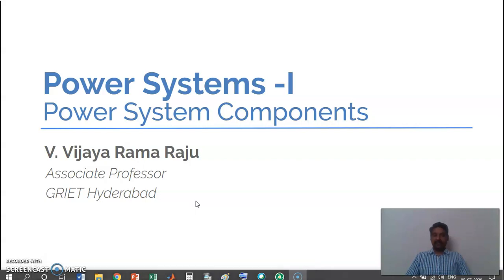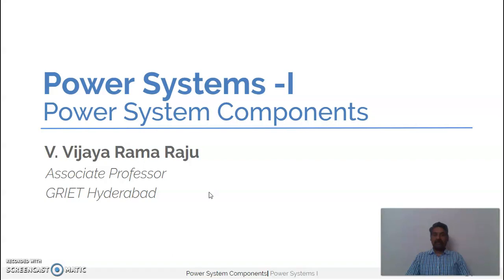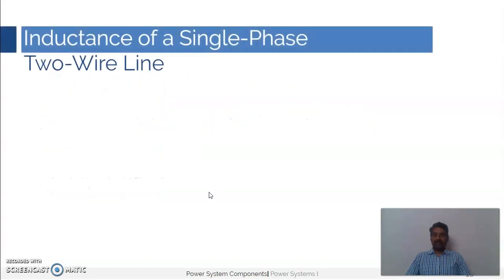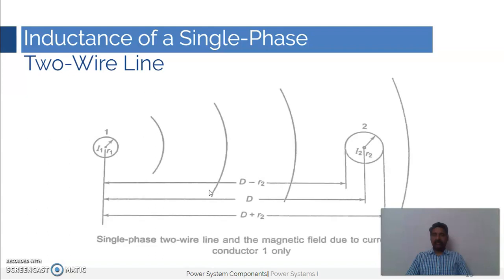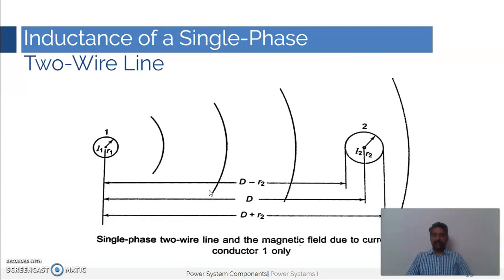Let us bring the conductor which is far away from the previous conductor to near the conductor. So let us try to calculate the inductance of a single-phase two-wire line. When you bring the second conductor near the first conductor it will form the single-phase circuit of our power systems.